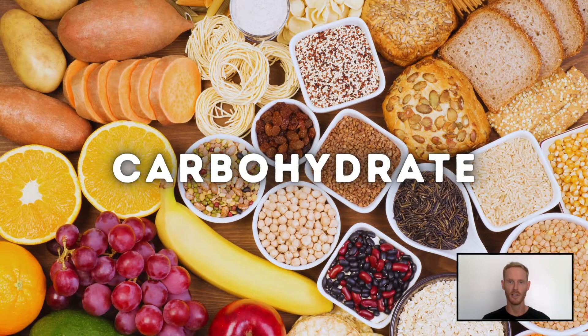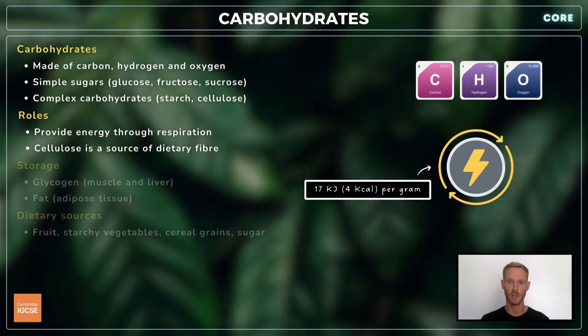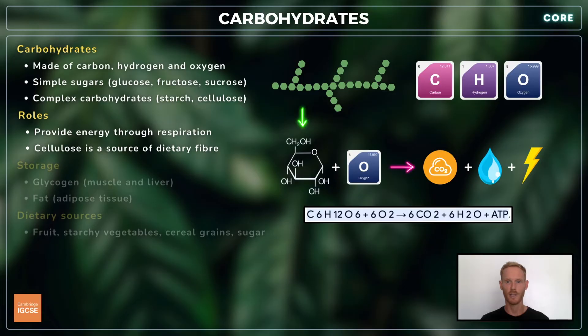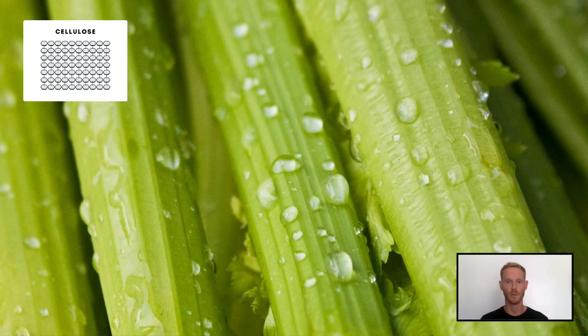Carbohydrates are the sugars, starches, and fibres found in fruits, grains, and vegetables. They're made up of the elements carbon, hydrogen, and oxygen, and their main role is as a quick and readily available source of energy. Complex molecules like starch are broken down by enzymes into simple sugars like fructose and glucose, which are oxidized through respiration into carbon dioxide and water. Not all carbohydrates provide energy — for example, cellulose that makes up the cell walls of plant cells is indigestible and provides little nutrition, but is an important source of dietary fibre.